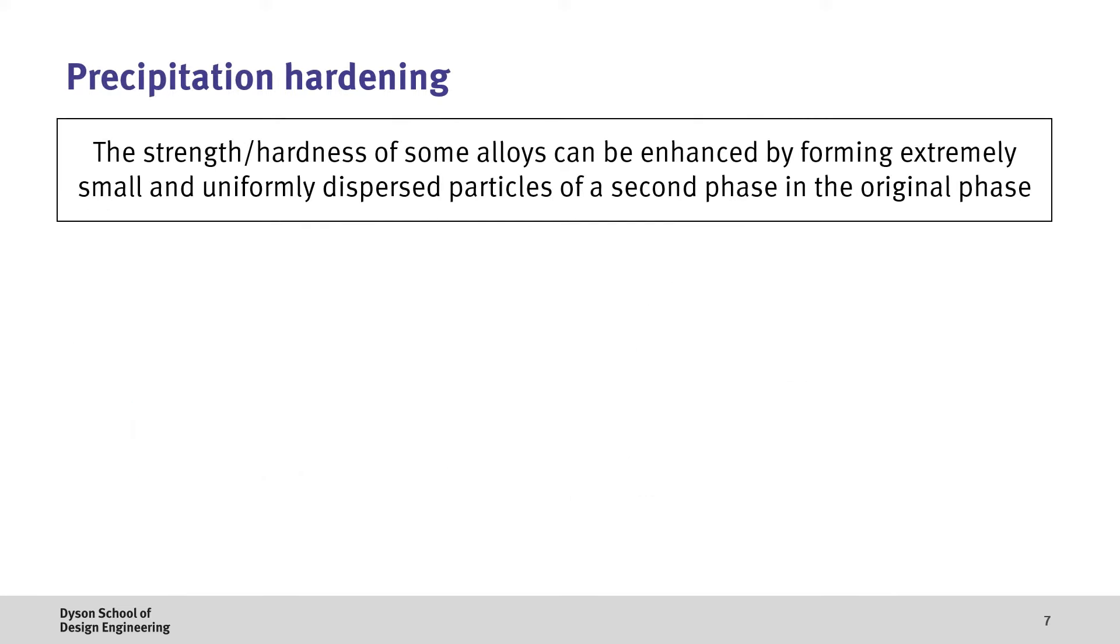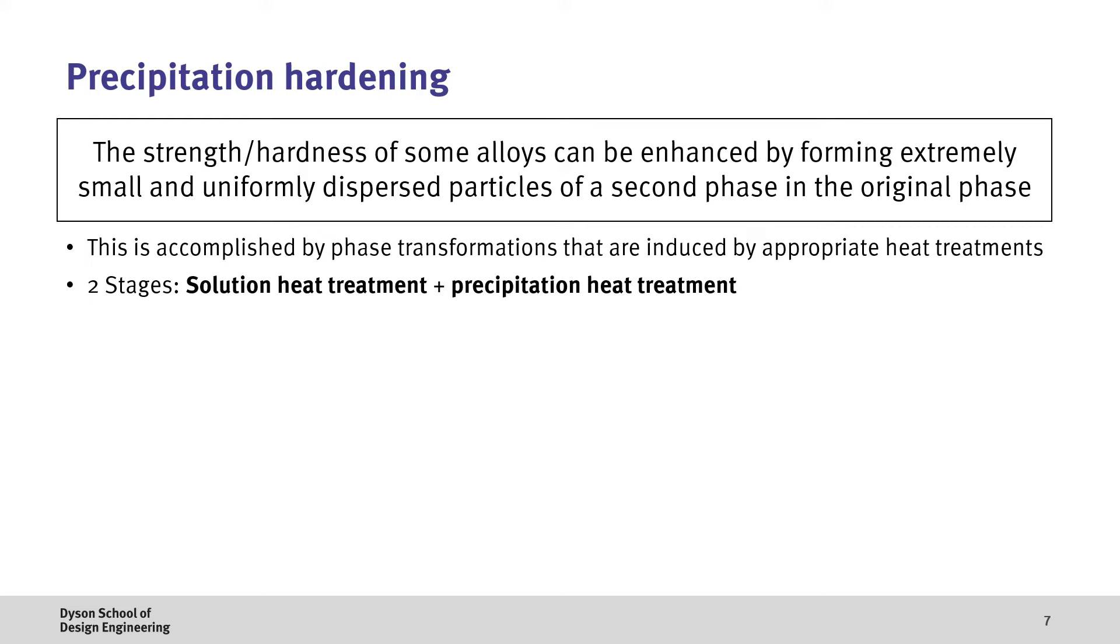Finally, we have precipitation hardening as a means of strengthening a material. Here, a small and uniformly dispersed phase is formed in the original phase, which again has the impact of impeding dislocation movement and therefore increasing the strength of the material. This can be achieved by specific heat treatment processes, which allow for non-thermodynamic or metastable structures to exist. For precipitation hardening, this is achieved in two stages.